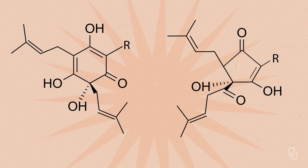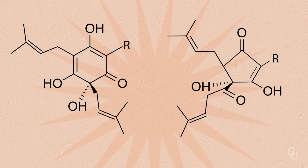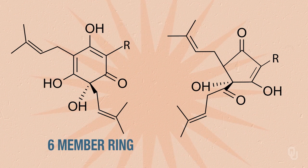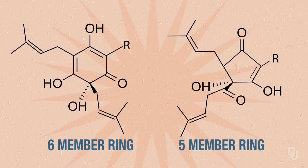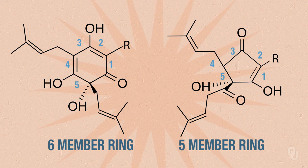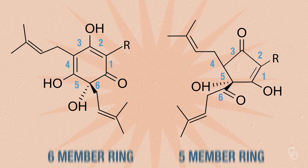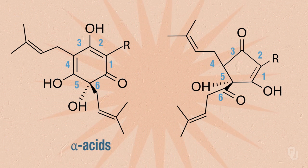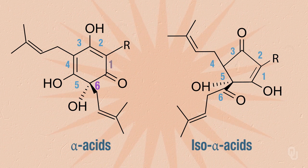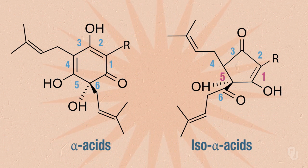One of these is the isomerization of alpha acids to iso-alpha acids. If we look at this transformation, what we're doing is turning our alpha acids from a six-membered ring into a five-membered ring. If we look at the ring and number one through six, what we'll see is that we have a transformation — a movement of the bond between the one and six carbon to the one-five carbon, and the six carbon becomes an external carbon.